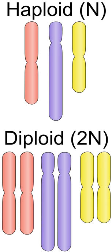Humans are diploid organisms, carrying two complete sets of chromosomes — one set of 23 chromosomes from their father and one set of 23 chromosomes from their mother. The two sets combined provide a full complement of 46 chromosomes. This total number of chromosomes is called the chromosome number.